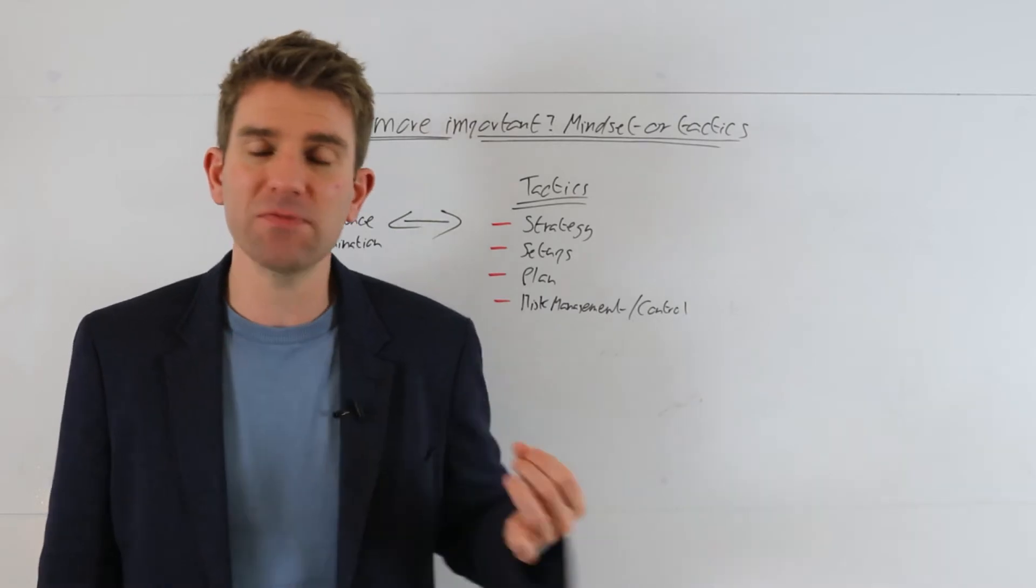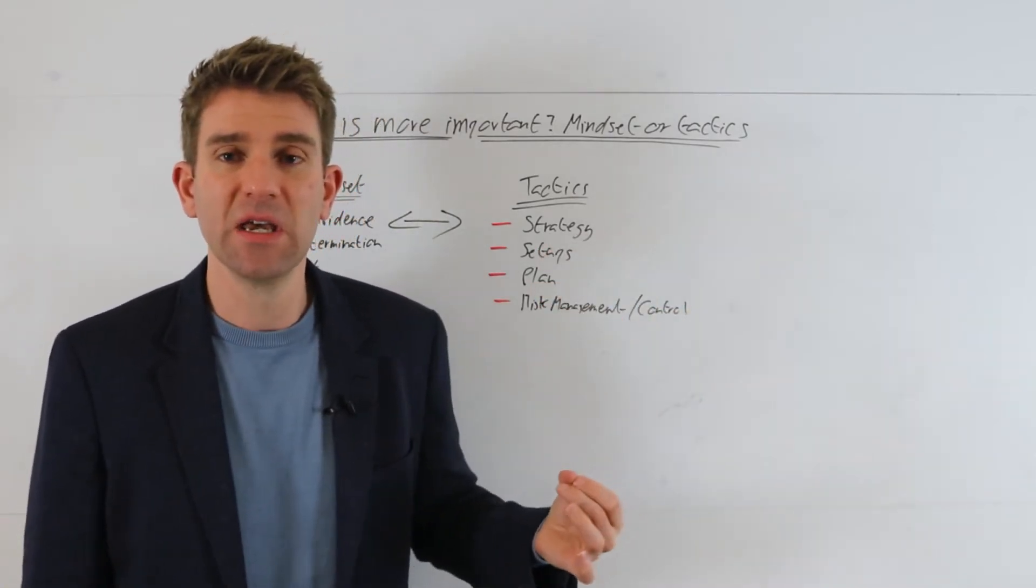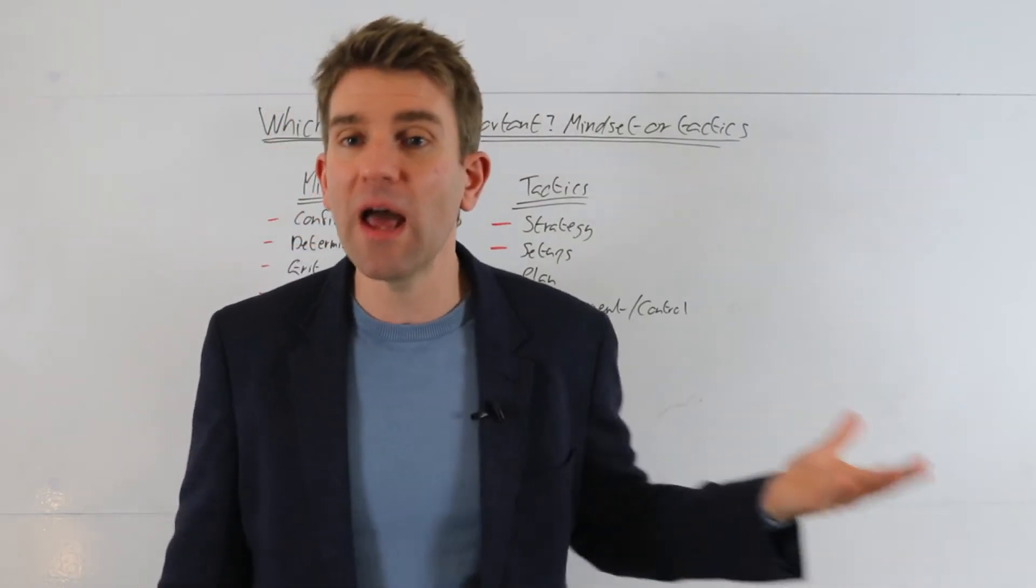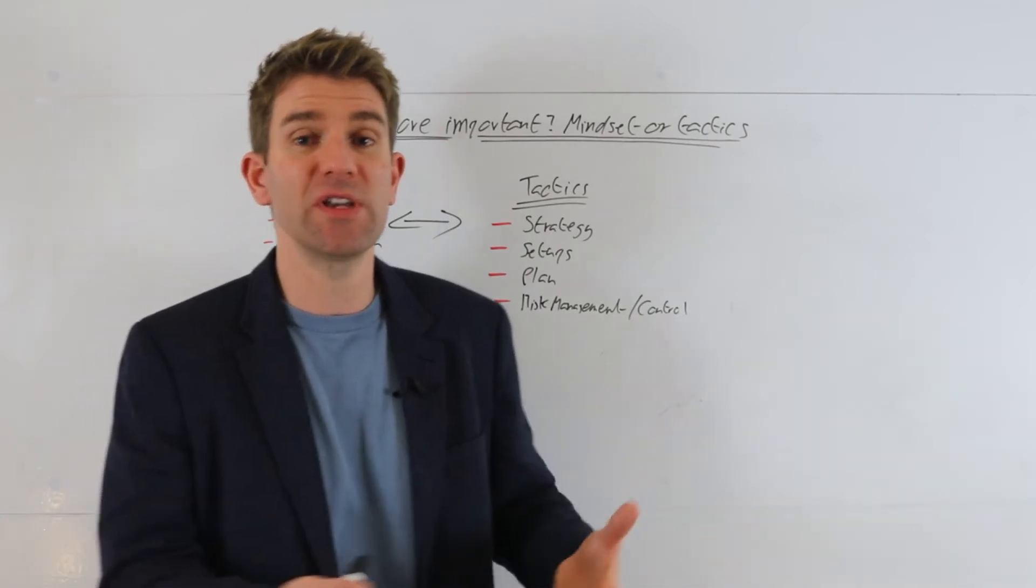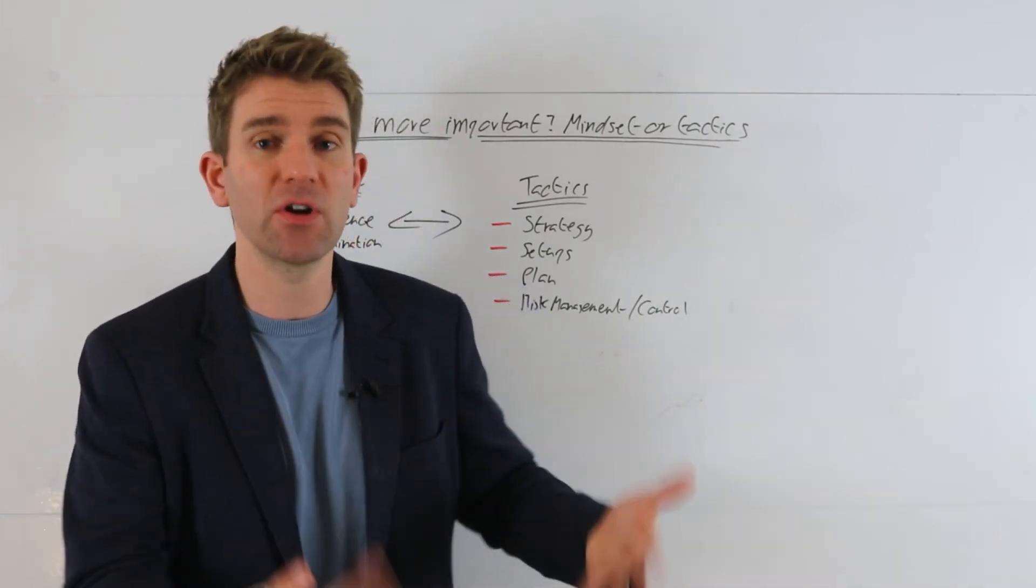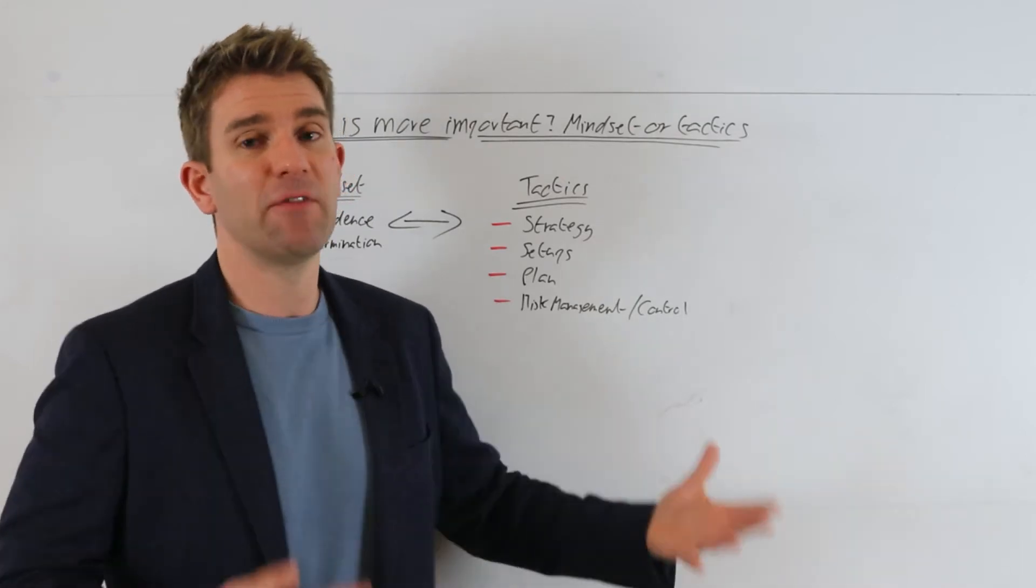If you don't have these, you're never going to execute. You could have the best mindset in the world, but if the strategy has a losing expectancy, playing roulette for example. Playing roulette has got a losing expectancy over time. Play enough occurrences, you'll lose all your money. That's just a fact.